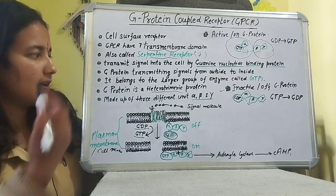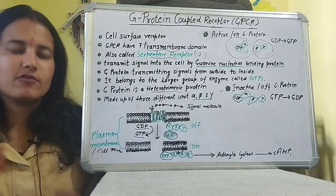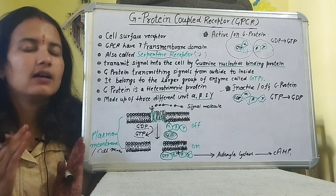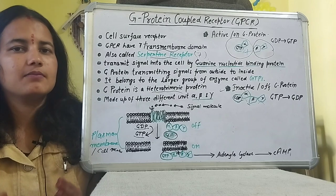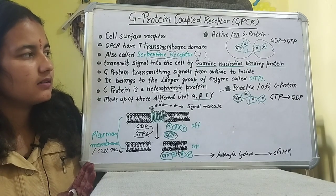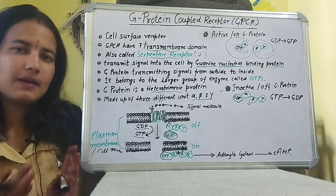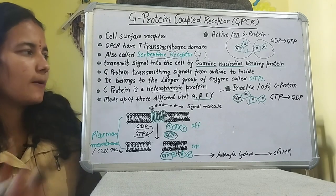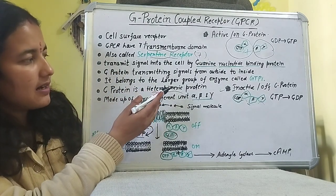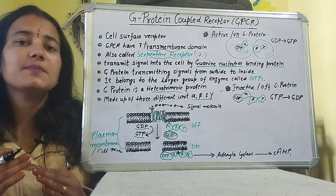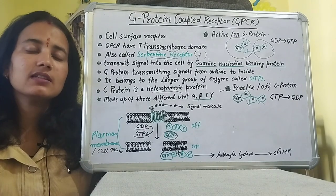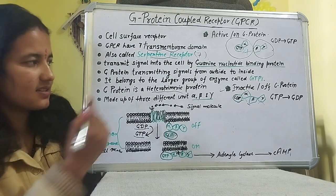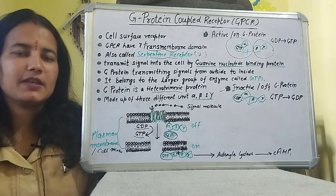The signal is transferred by a guanine nucleotide binding protein, which helps transmit signals from outside to the inside of the cell. The nucleotide involved is called GTP, which stands for guanosine triphosphate.